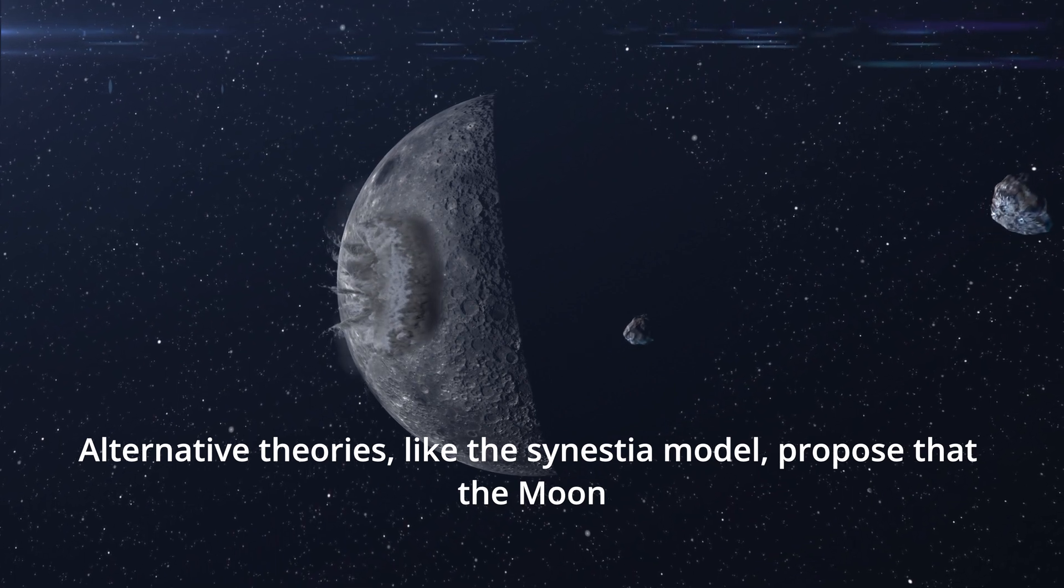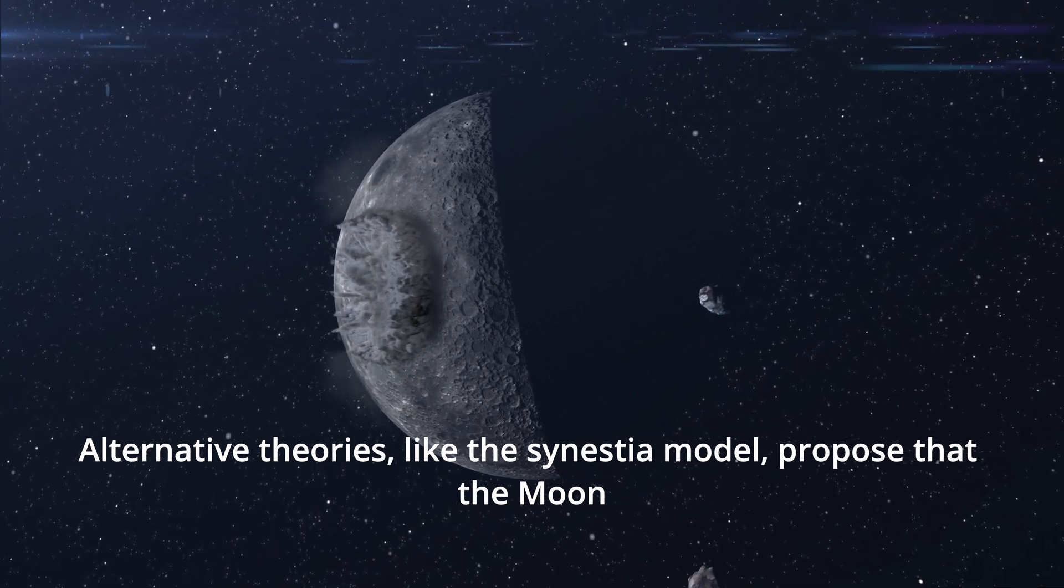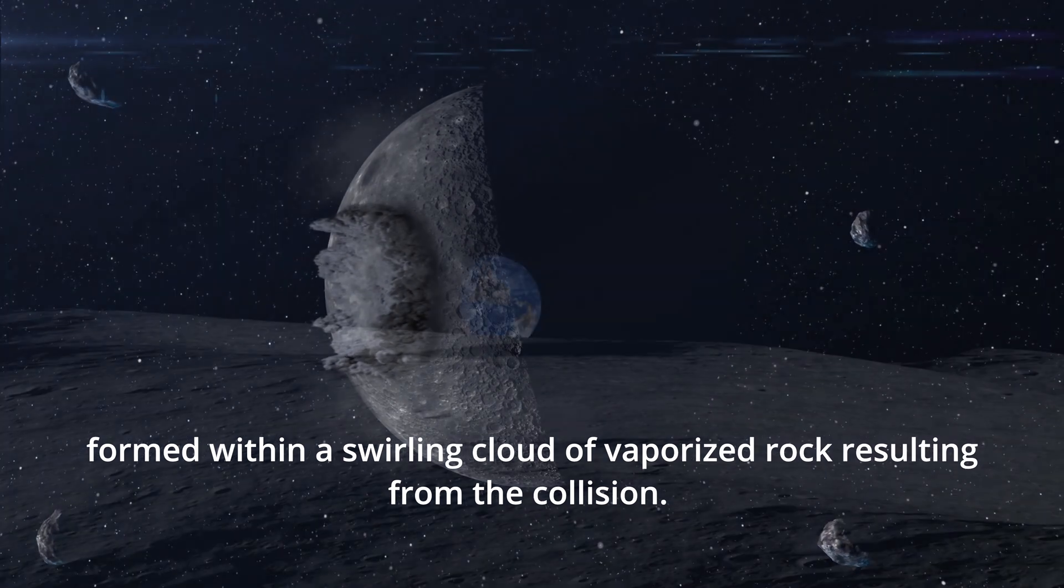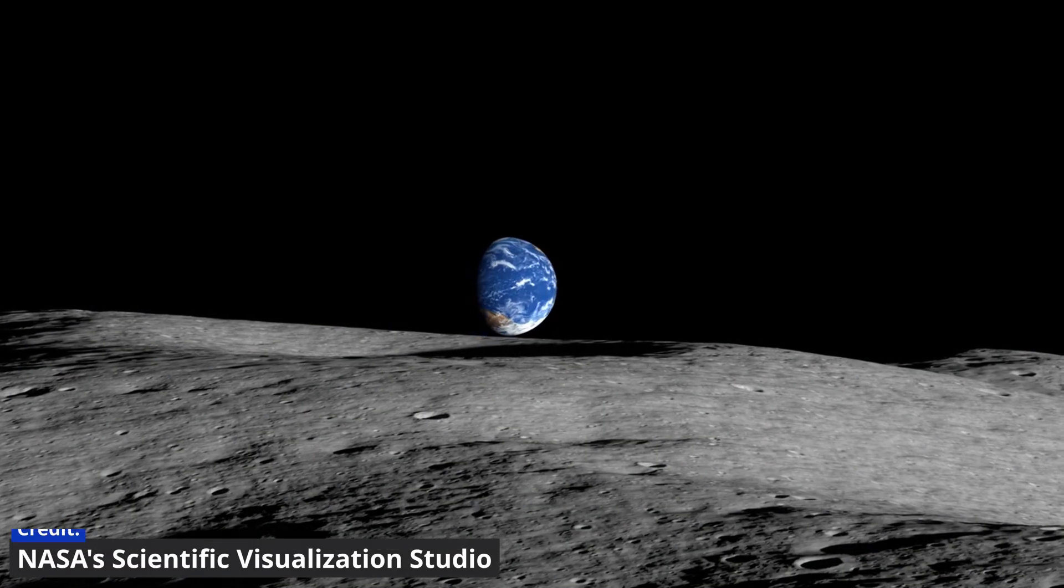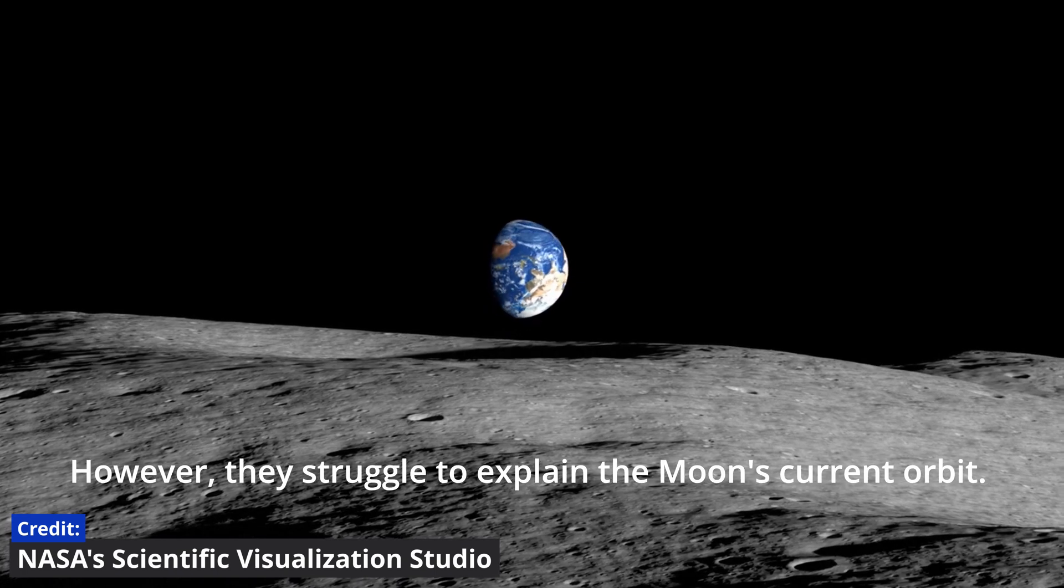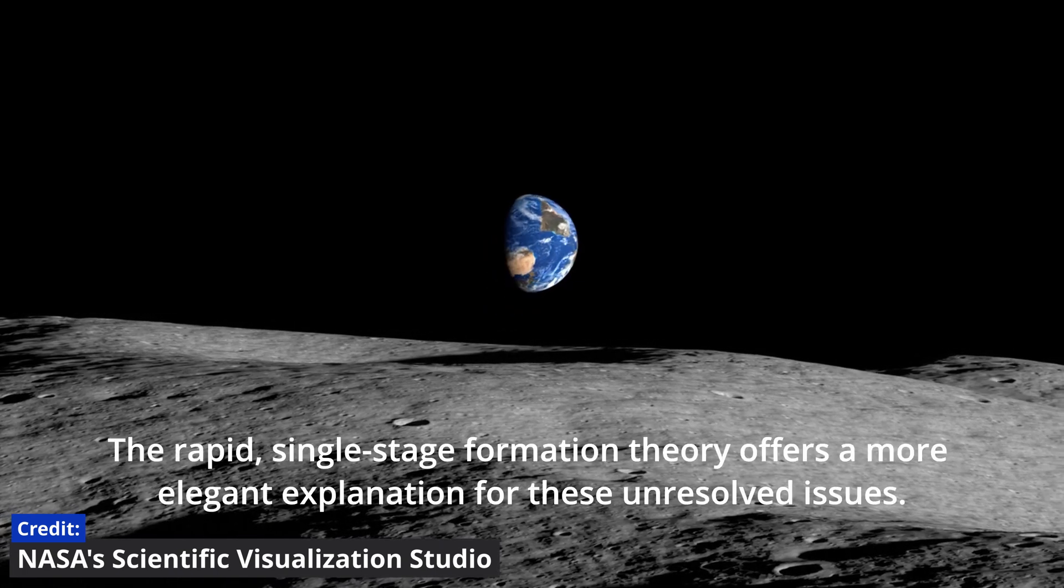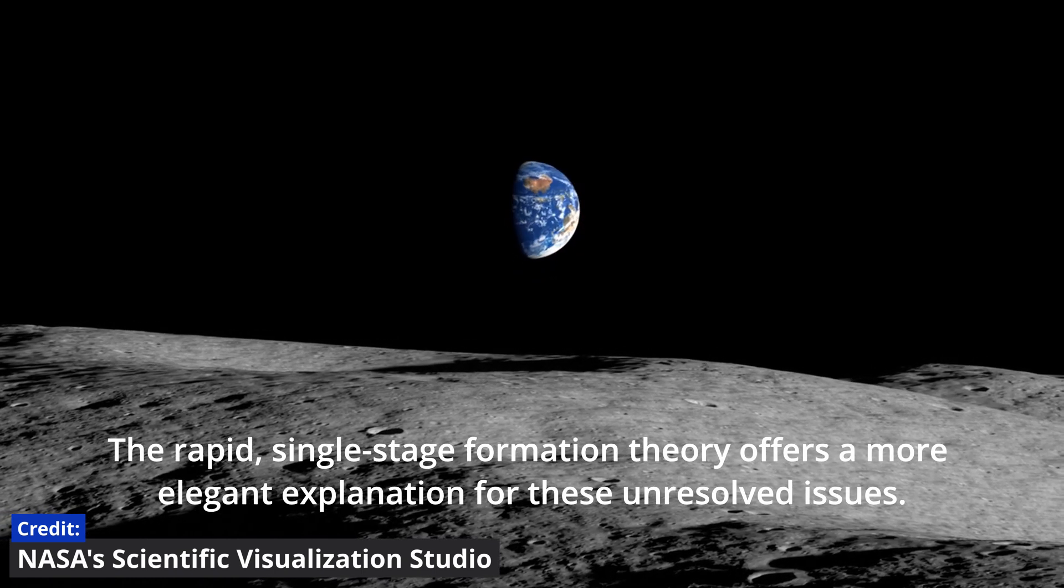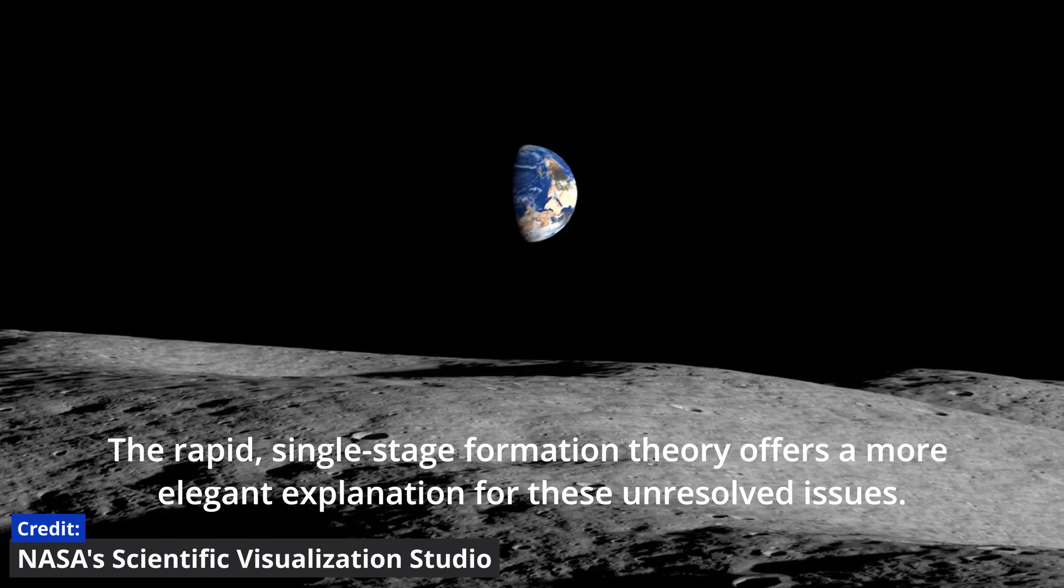Alternative theories, like the synestia model, propose that the Moon formed within a swirling cloud of vaporized rock resulting from the collision. However, they struggle to explain the Moon's current orbit. The rapid, single-stage formation theory offers a more elegant explanation for these unresolved issues.